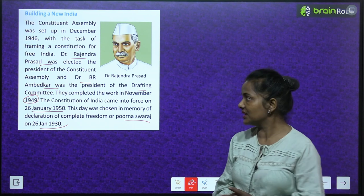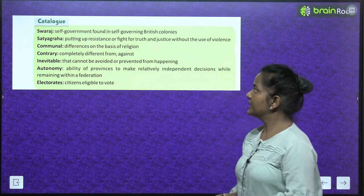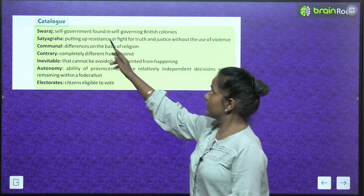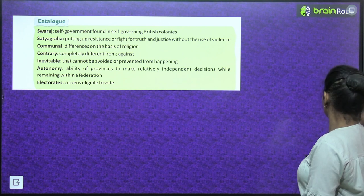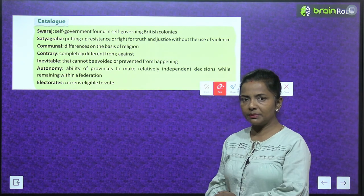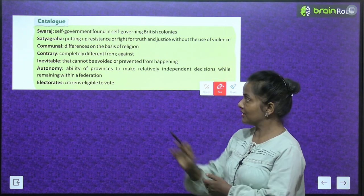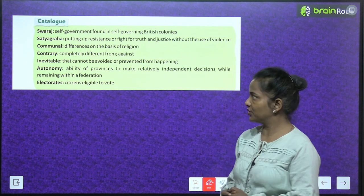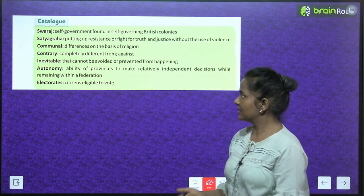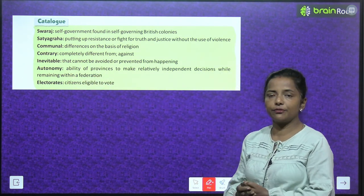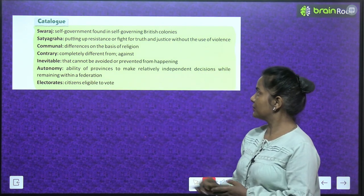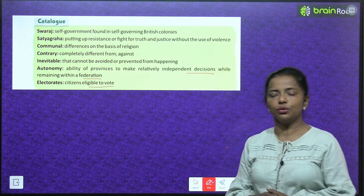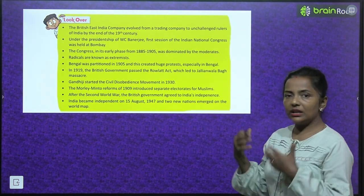Key glossary terms from the chapter: Swaraj means self-government found in self-governing British colonies. Satyagraha means putting up resistance or fighting for truth and justice without the use of violence. Communal means differences on the basis of religion. Contrary means completely different from or against. Inevitable means that which cannot be avoided or prevented from happening. Autonomy means the ability of provinces to make relatively independent decisions while remaining within a federation. Electorate means citizens eligible to vote.